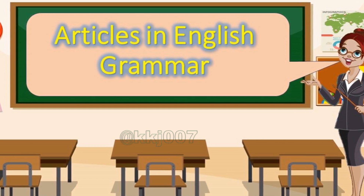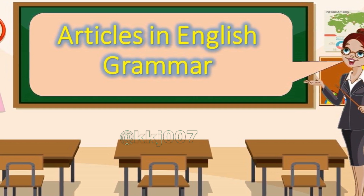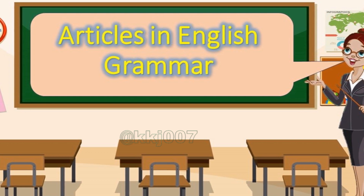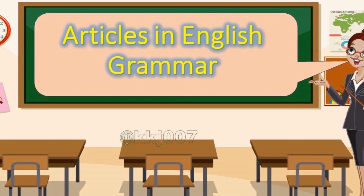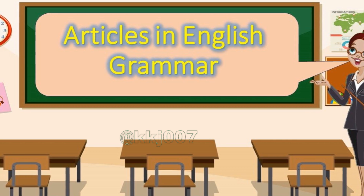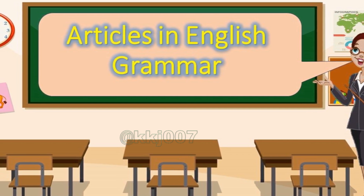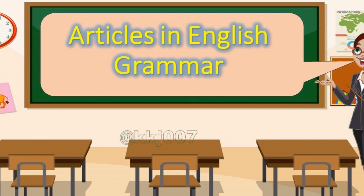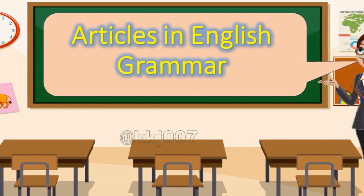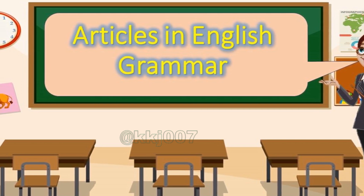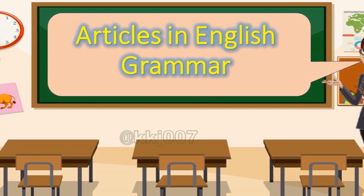Tip: sports and academic subjects do not require articles. It is incorrect to say: I like to play the baseball. The correct way to say is: I like to play baseball. It is incorrect to say: my sister was always good at the math. The correct way to say is: my sister was always good at math.